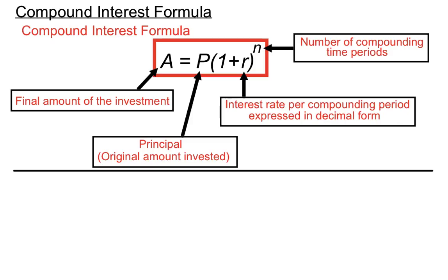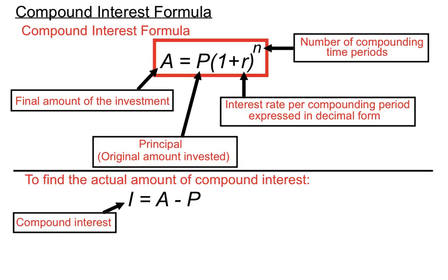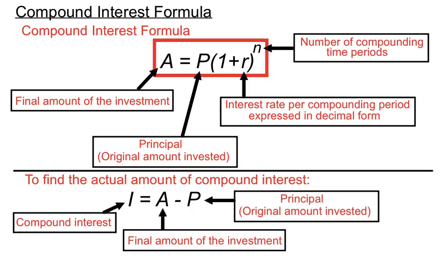Now, it's called the compound interest formula, but in a bit of a quirky situation, it doesn't actually work out compound interest — it works out the amount in the account, including the principal. So if we actually want to find just the compound interest, we have to take off the principal using this paired formula: I equals A minus P. The I is just the compound interest amount. We take the final amount A and subtract the principal P to get just the growth — the compound interest component. So the compound interest formula, which is somewhat poorly named, gives us the total amount, and we subtract the principal to isolate the compound interest.